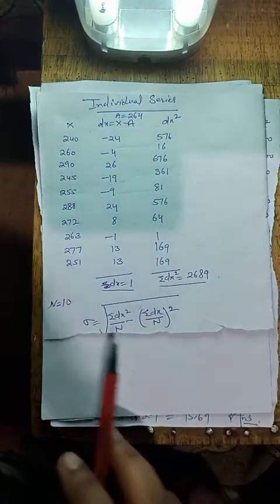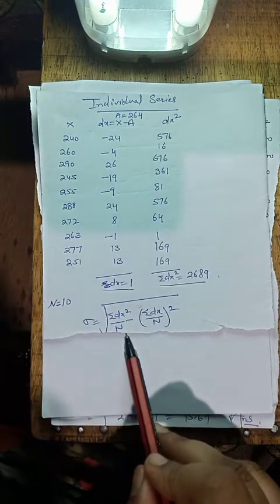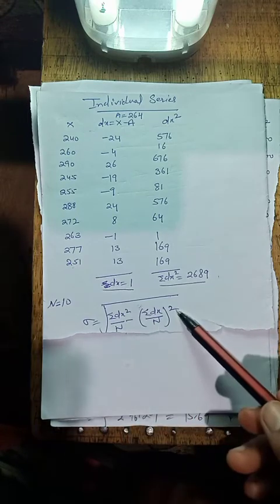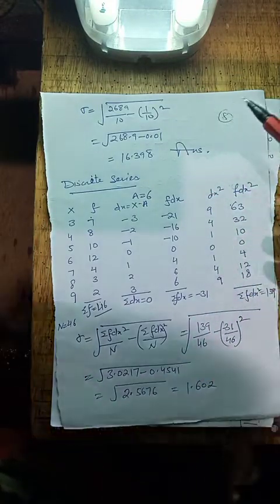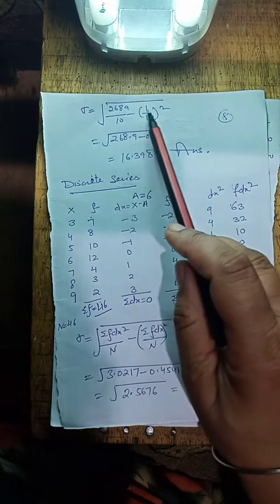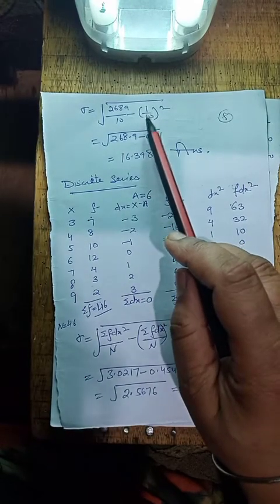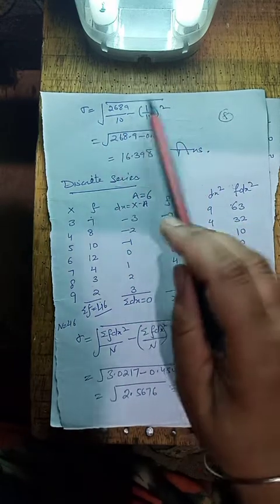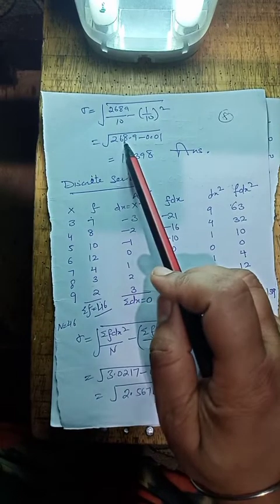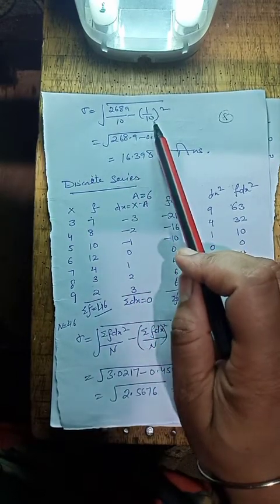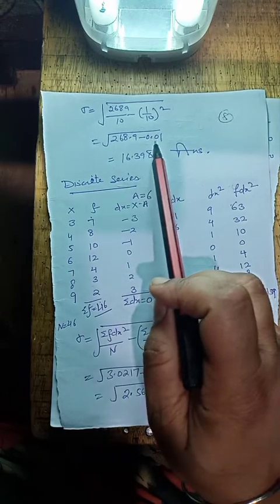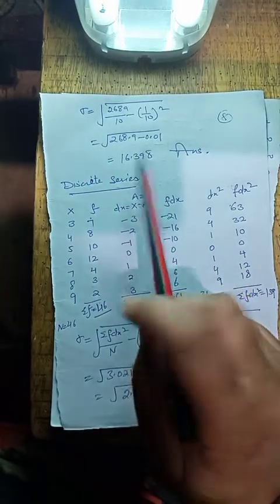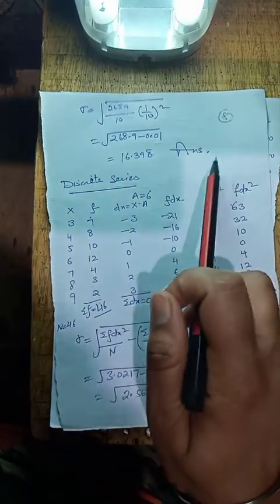n = number of items = 10. Formula: square root of (summation dx² / n) minus (summation dx / n) whole square. Value put करने पर: 2689/10 minus (1/10)² = 268.9 minus 0.01 = 268.89. उसका square root निकालने के बाद हमारे पास answer 16.398 आ रहा है।